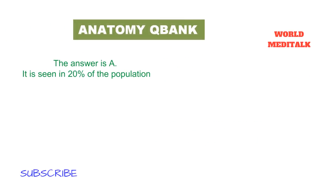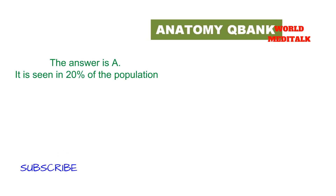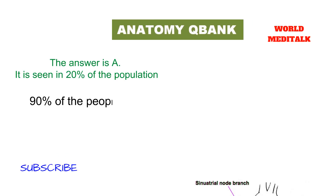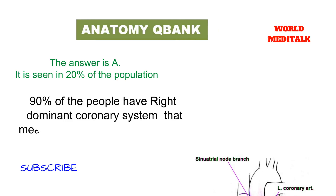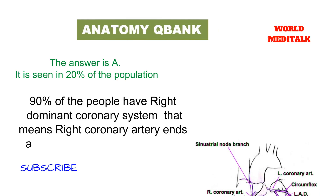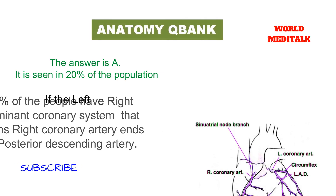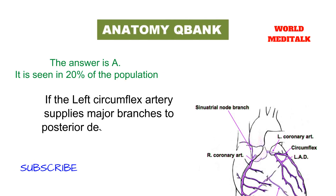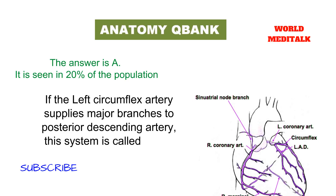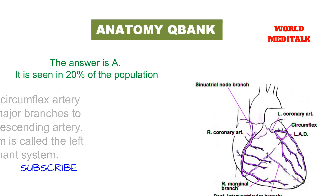The answer is option A — 'seen in 20% of the population' — this statement is NOT true, because 90% of people have a right dominant coronary system, meaning the right coronary artery ends as the posterior descending artery. If the left circumflex artery supplies major branches to the posterior descending artery, that system is called the left dominant system.